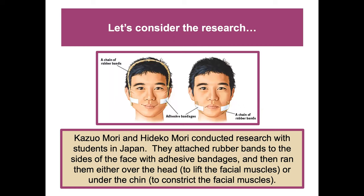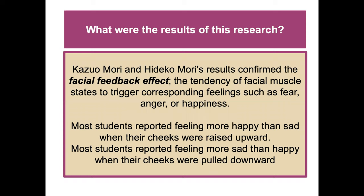Kazuo Mori and Hideko Mori conducted research with students in Japan. They attached rubber bands to the sides of students' faces and ran them either over the head to lift the facial muscles or under the chin to constrict them. This confirmed the facial feedback effect — the tendency of facial muscle states to trigger corresponding feelings such as fear, anger, or happiness. Most students reported feeling happier when cheeks were raised upward, and sadder when cheeks were pulled downward.